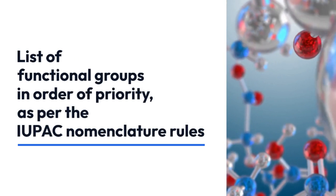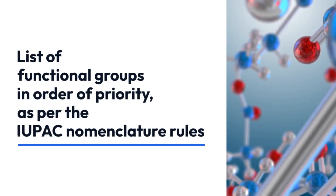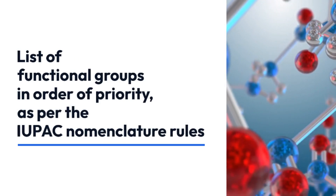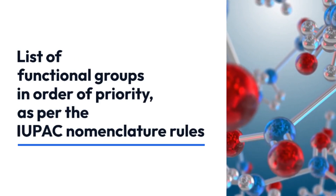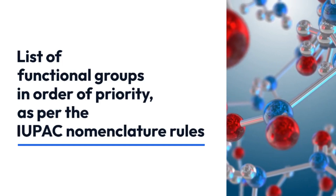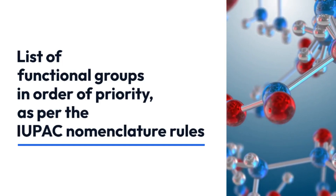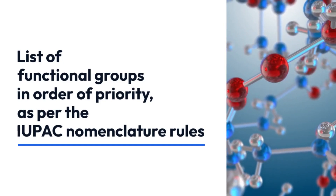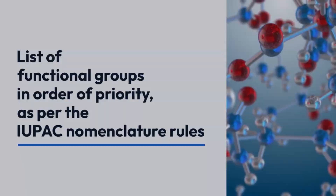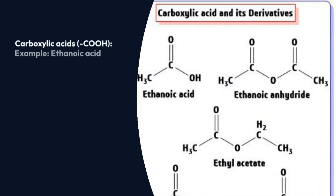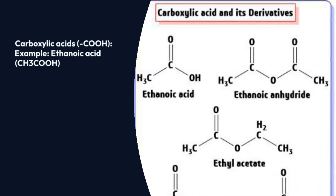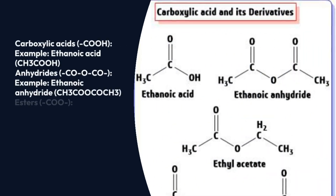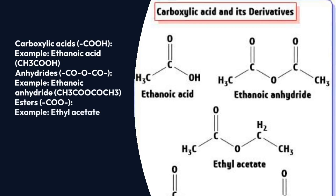List of functional groups in order of priority as per IUPAC nomenclature. You must know the IUPAC nomenclature. Each functional group gets a priority. As per IUPAC nomenclature, carboxylic acid and its derivatives get first priority.